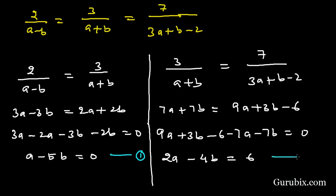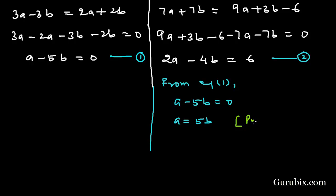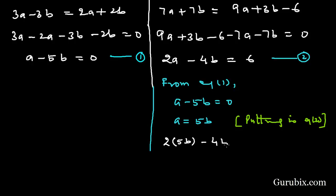From equation number 1, A minus 5B equals 0, which means A equals 5B. Now we substitute this value into equation number 2. Putting A equals 5B into equation 2, we have 2 times 5B minus 4B equals 6. This means 10B minus 4B equals 6, so 6B equals 6, giving us B equals 1.